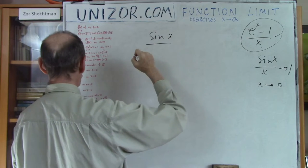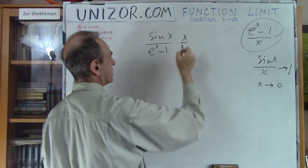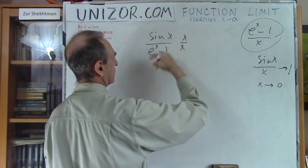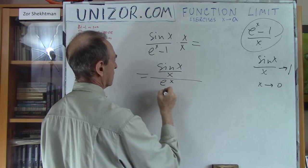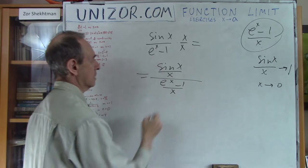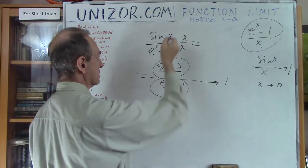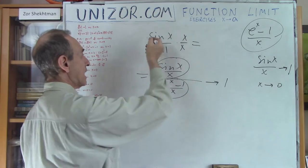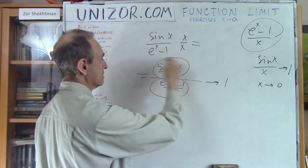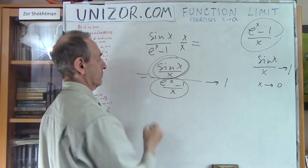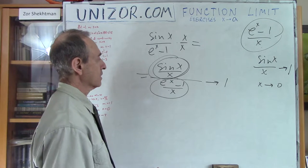Next is sin(x)/(e^x − 1) as x goes to 0. You just multiply and divide by x, then group it as [sin(x)/x] divided by [(e^x − 1)/x]. The first part goes to 1 and the second part goes to 1, so the whole thing goes to 1. I cannot substitute 0 directly — sine of 0 is 0, and e^0 − 1 is also 0, so it's indeterminate. But after this manipulation, everything is determined.